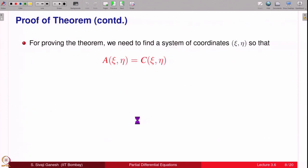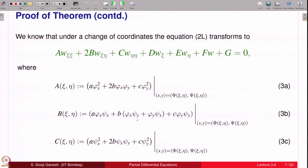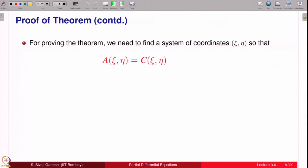What do we need for proving the theorem? We want w_ξξ and w_ηη to appear with coefficients 1. In particular, a must be equal to c and equal to 1, and b is 0. Once b is 0 and a equals c, we can divide by a, then we'll get w_ξξ + w_ηη anyway. The condition is a equal to c and b equal to 0. That is enough.